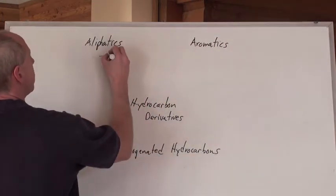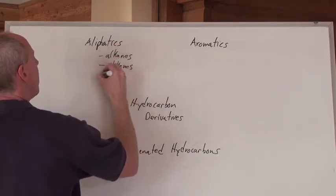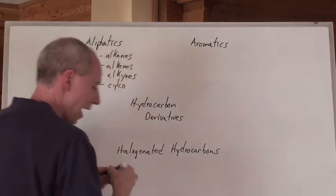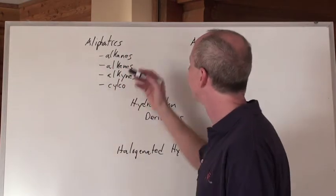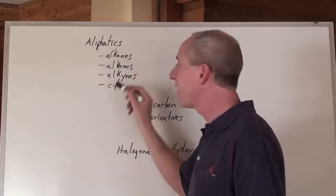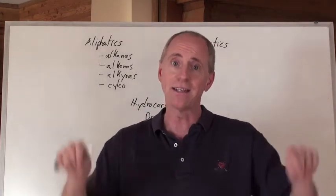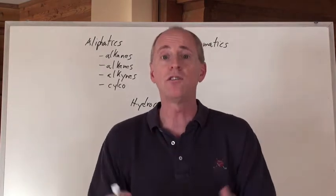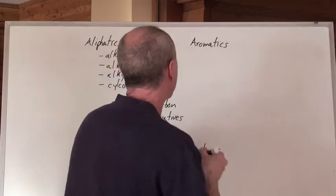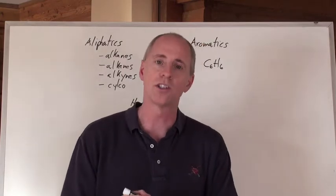They can actually be broken down into things called alkanes, alkenes, and alkynes, and also some cycloalkyl groups as well. Alkanes are single-bonded hydrocarbons. Alkenes have double bonds in them. Alkynes have triple bonds in them. Cyclos are actually put together in circles or connected organic molecules in ring structures. They all fall under the aliphatic type of umbrella.